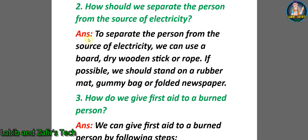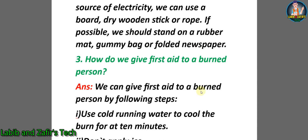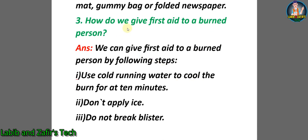Number two: How should we separate the person from the source of electricity? Answer: To separate the person from the source of electricity, we can use a board, dry wooden stick, or rope. If possible, we should stand on a rubber mat, gummy bag, or folded newspaper.